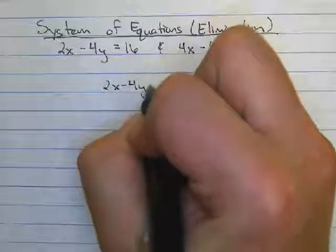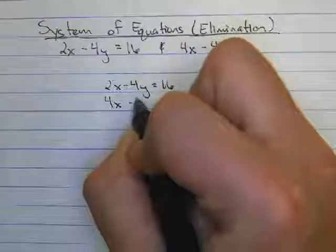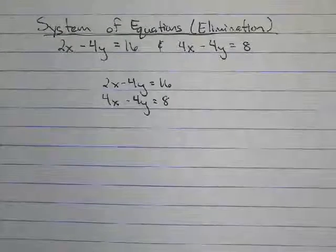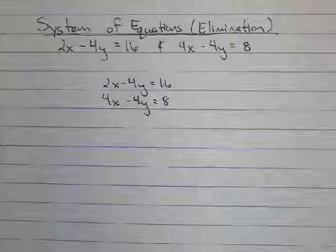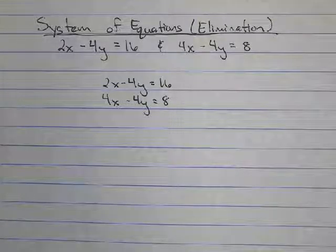So I have 2x minus 4y equals 16 and then underneath I'll put my 4x minus 4y equals 8. So my goal is to have matching but opposite coefficients. That way when I add the two equations together one of my variables will cancel out.